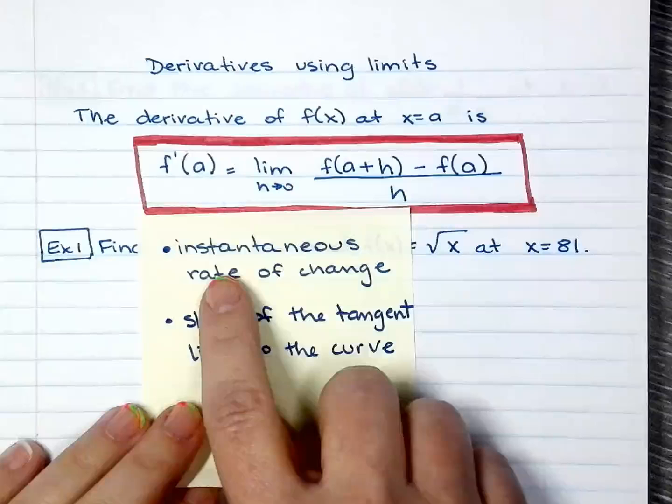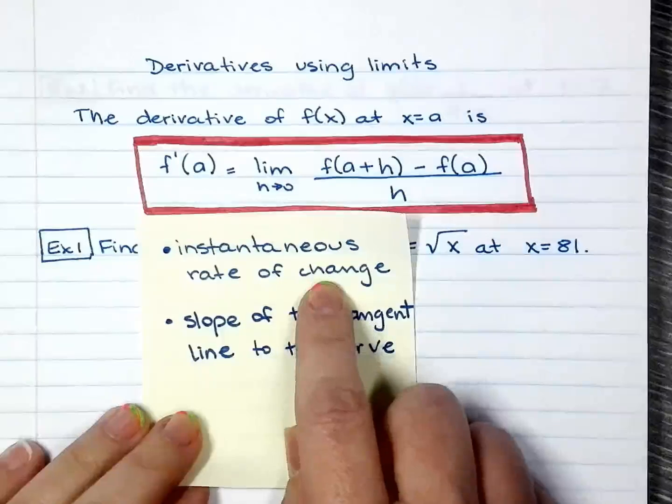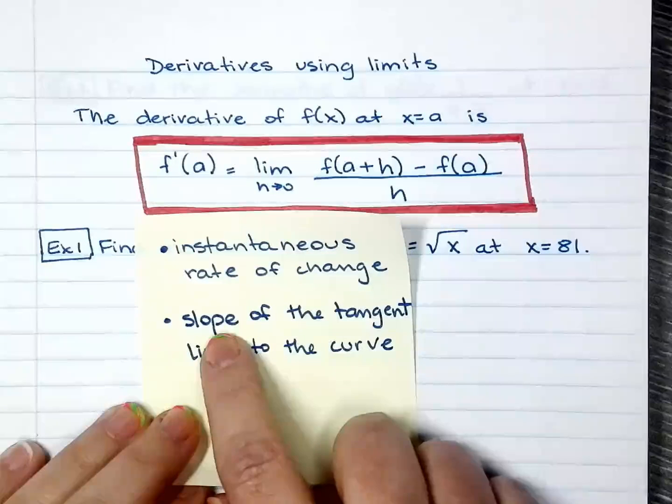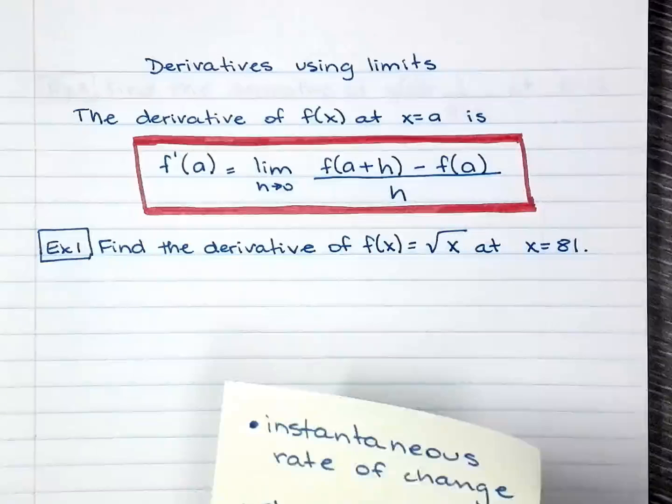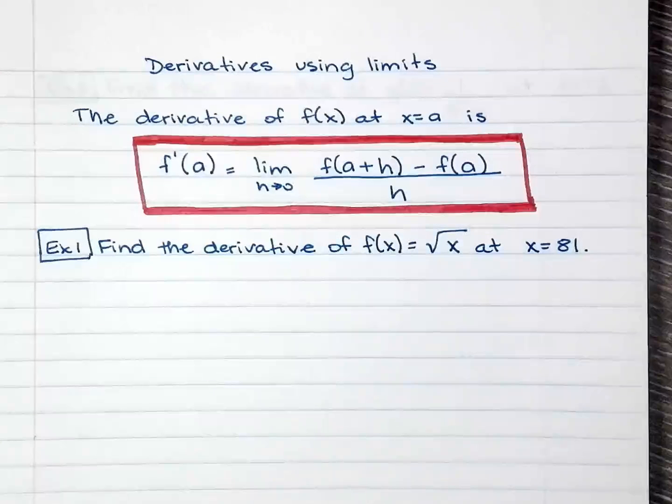Derivatives is we're still finding the instantaneous rate of change and we're still finding the slope of the tangent line we did before. Okay, let's get going.